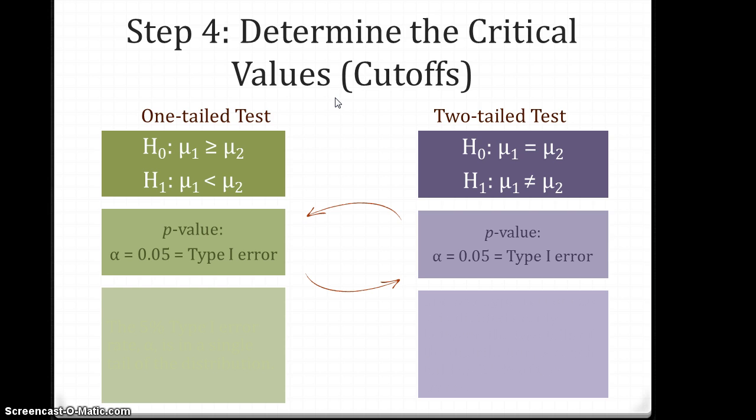The two-tailed test and the one-tailed test both have the same p-value, the same type 1 error rate in this example. We're still setting it as alpha equals 0.05, or 5% of the time we're okay with making a type 1 error.